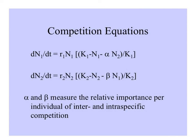We can elaborate those competition equations with the competition coefficients included. In the numerator of the bracketed quantity, we subtract the competition coefficient times the population size of the other species, combined with the other terms over the carrying capacity of the first species. In the equation for species 1 we use alpha — the effect of species 2 on species 1; in the equation for species 2 we use beta — the effect of species 1 on species 2. Those two coefficients measure the relative importance per individual of inter- and intraspecific competition.